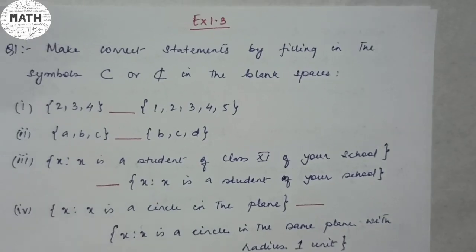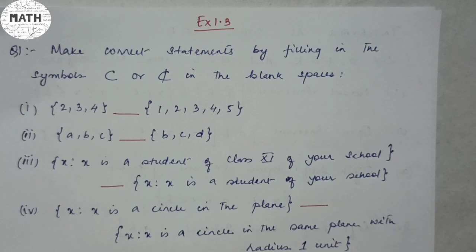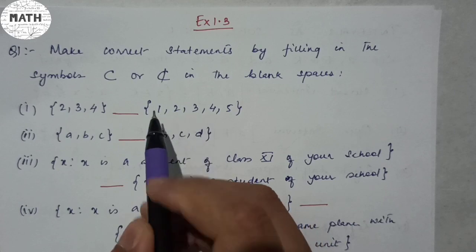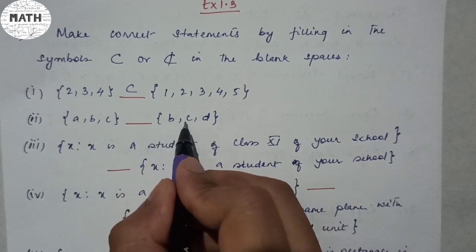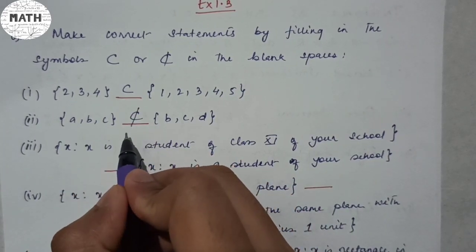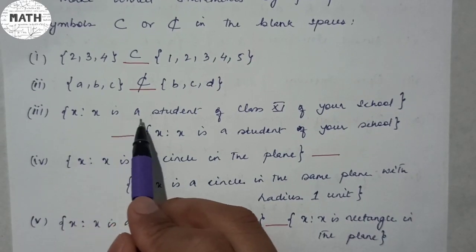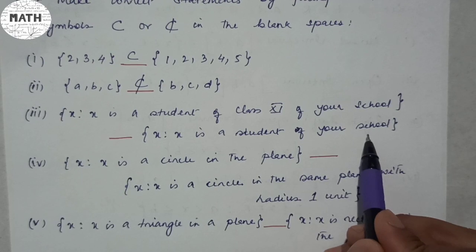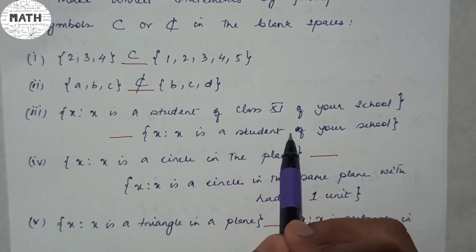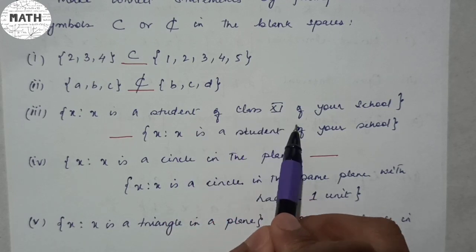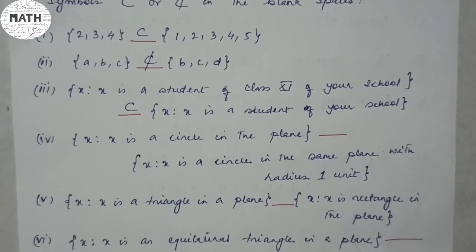Let us do question number one of exercise 1.3. The question says: make correct statements by filling in the symbols subset or not-a-subset in the blank space. First: {2, 3, 4} — {1, 2, 3, 4, 5}. This one is inside that one, so it is a subset. Second: {a, b, c} — {b, c, d}. B and C are there but A is not, so it's not a subset. Third: X is a student of class 11 of your school — X is a student of your school. Class 11 students are also students of your school, so this is a subset.